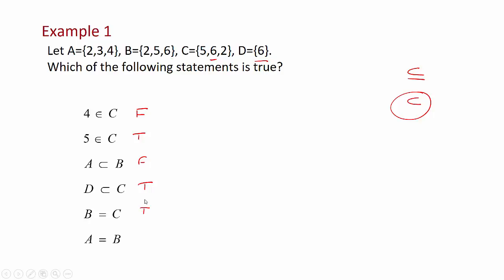And lastly, A is equal to or equivalent to B. Again B we have 2, 5 and 6. A is 2, 3 and 4. There's one common element there but A is not the same as B, not equivalent. They don't have the same members.